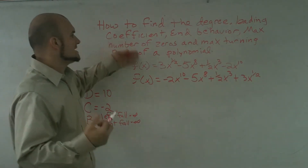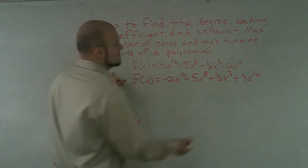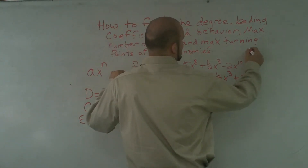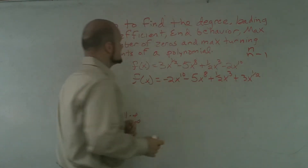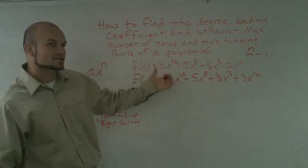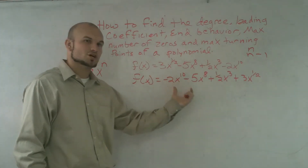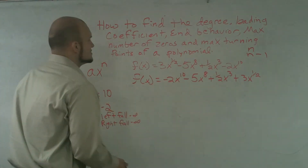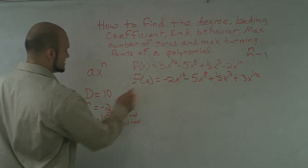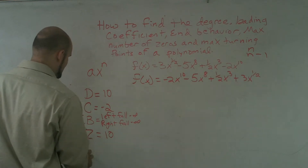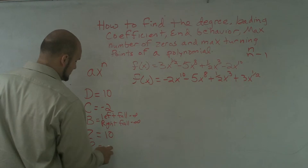Next we look at the max number of zeros. Our max number of zeros equals n, and the max number of turning points equals n minus 1. Since our degree is 10, the max number of zeros is 10, and the max number of turning points is 10 minus 1, which is 9.